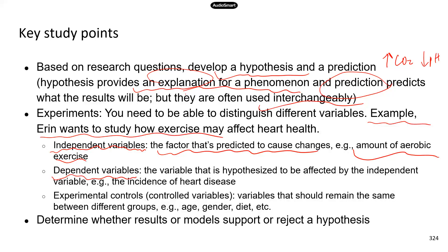The dependent variable is what you measure. In the case of carbon dioxide and blood pH, blood pH is what you're going to measure — that's the dependent variable. In Erin's experiment, the dependent variable would be something that indicates the health of the heart, such as the incidence of heart disease in a particular population, or among the participants who volunteer to take part in her research.